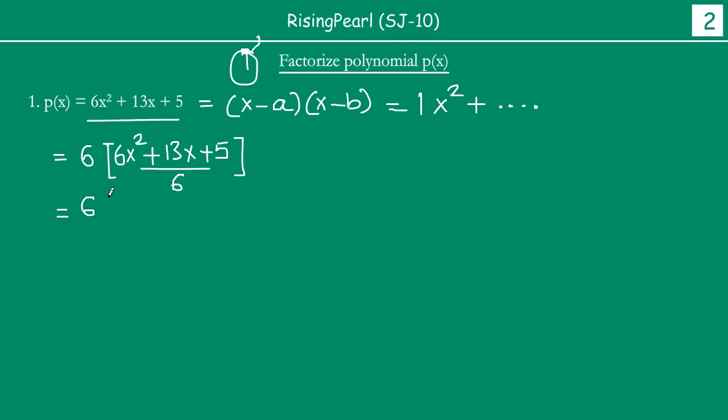The moment we do this, we have taken our polynomial, we are multiplying and dividing it by six. And the reason we are doing that is we want to make sure the coefficient of x² becomes one. This means this is six times, if you now write this individually, you will get x² plus 13/6 x plus 5/6. So now what you have is the polynomial can be written as six times [x² + 13x/6 + 5/6].